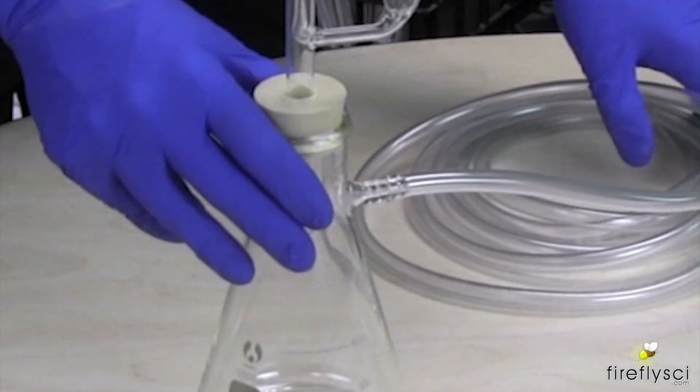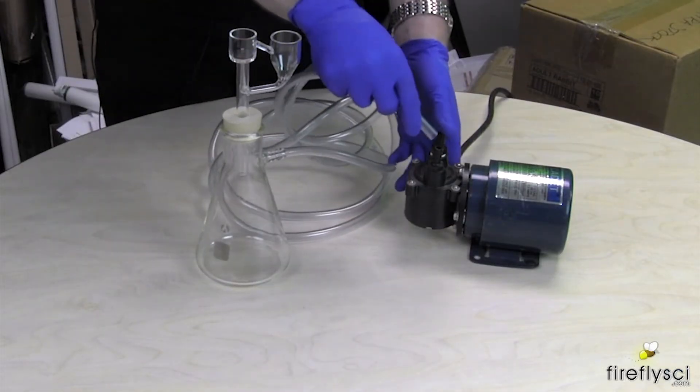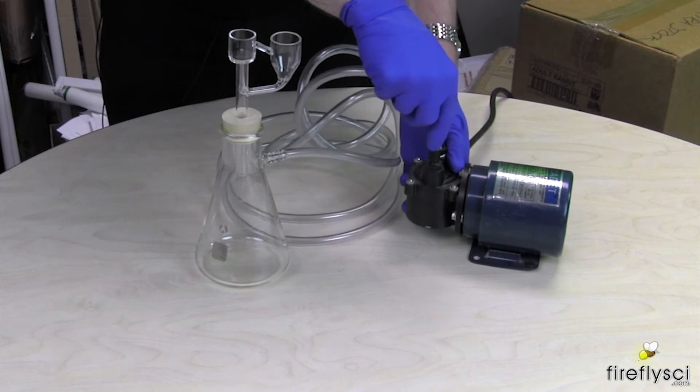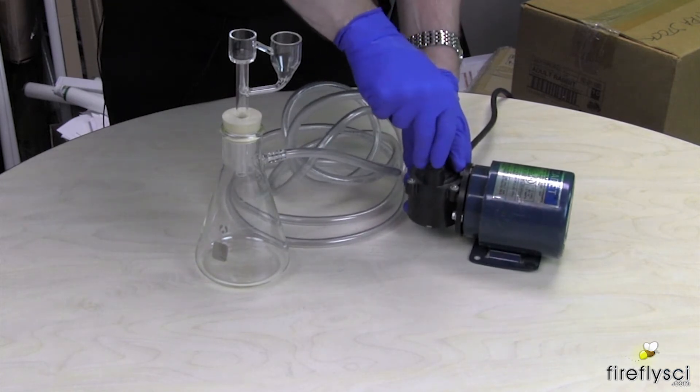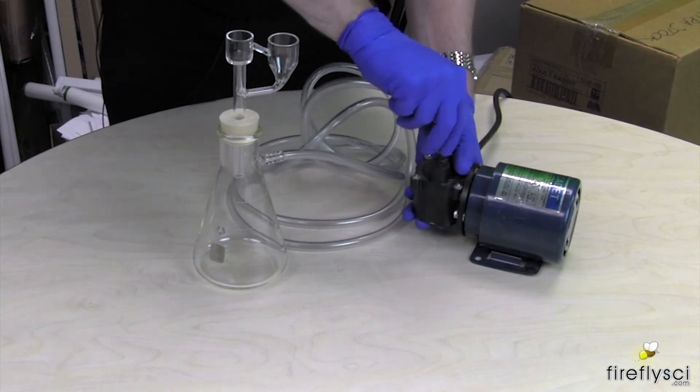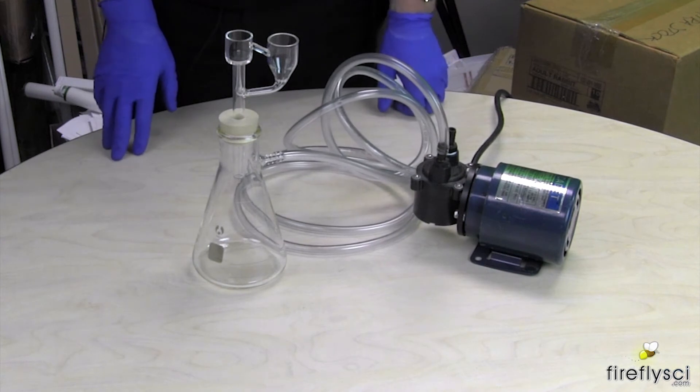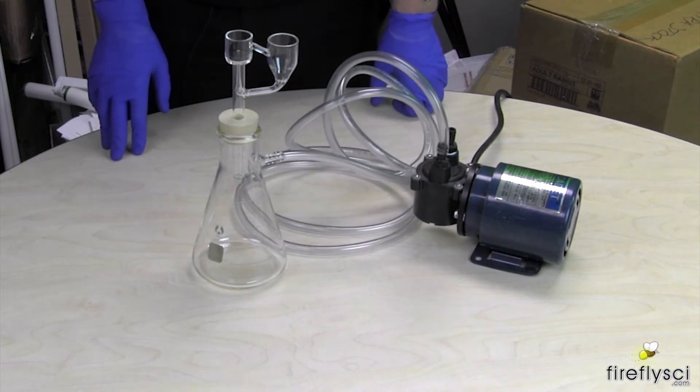And now we're going to hook it up to our vacuum pump. Now we're just going to take our tubing and put it onto the vacuum line here. And then just push it on. It doesn't have to be on all the way, just so it's tight and secure and you're all set. This is all hooked up. Let's get a cuvette and see how it works.